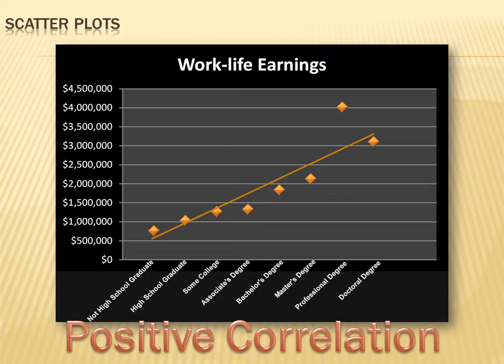For instance, temperatures on Earth have been increasing pretty regularly for the last 300 years, while the number of pirates has decreased over the last couple of hundred years. There is a correlation there, but you'd be hard pressed to demonstrate a cause and effect relationship — temperatures going up haven't caused the number of pirates to go down, and the decrease in pirates hasn't caused global warming.